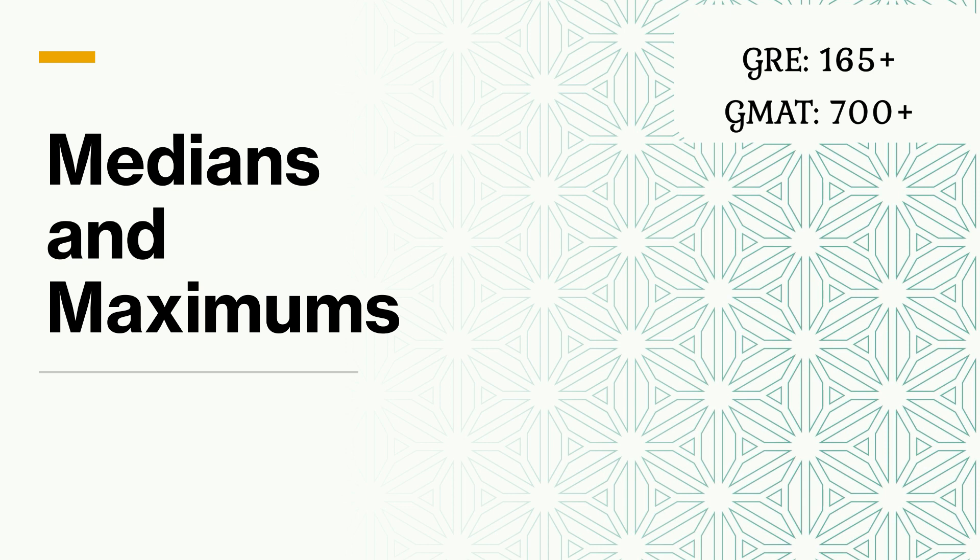I would call it a 165 level topic or a 700 level topic for the GMAT, and it's to do with greatest possible value, least possible value, medians, and maximums. It's a fairly tricky topic, but do let me know in the comments if I explained it well back in 2018 or 19, and if you do, I will release more videos I made back then before I even started this YouTube channel.